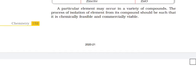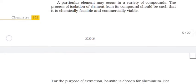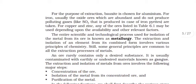A particular element may occur in a variety of compounds. The process of isolation of element from its compound should be such that it is chemically feasible and commercially viable. For the purpose of extraction, bauxite is chosen for aluminum. For iron, usually oxide ores, which are abundant and do not produce polluting gas like SO2, are taken. For copper and zinc, any of the ores listed in the table may be used depending upon the availability and other relevant factors.